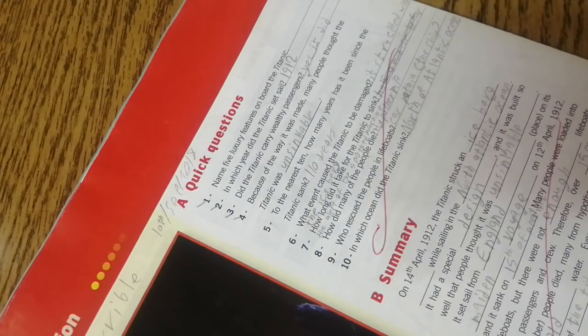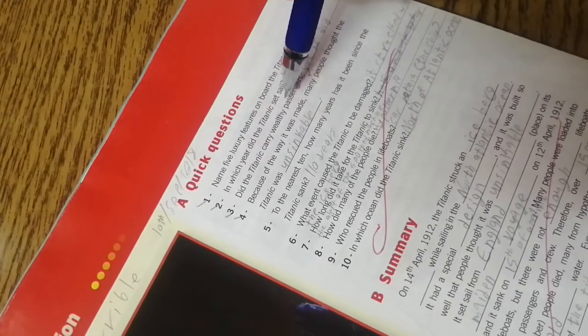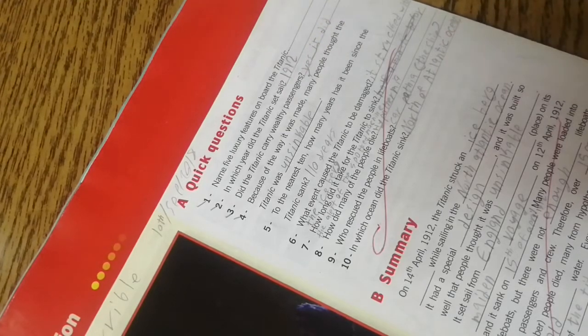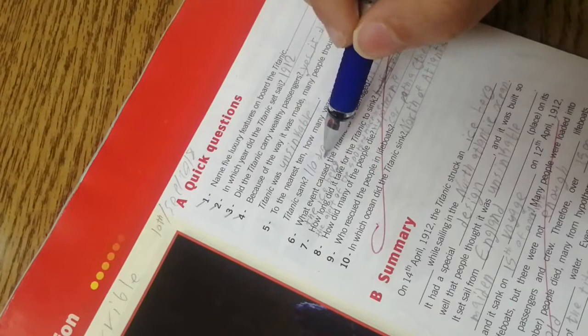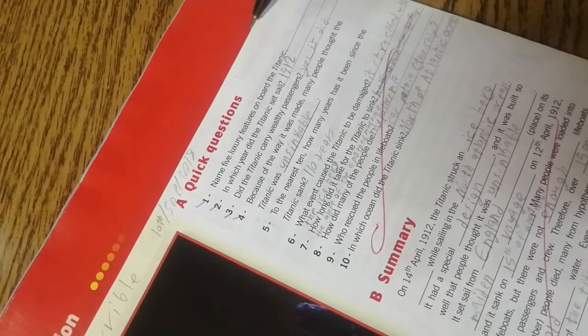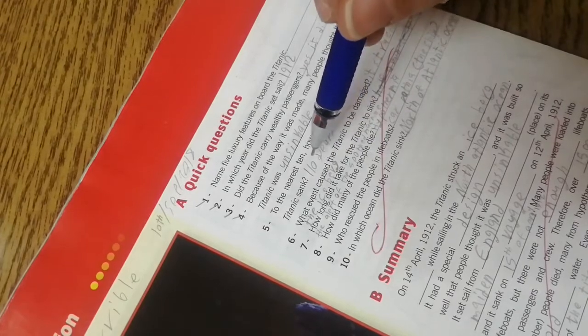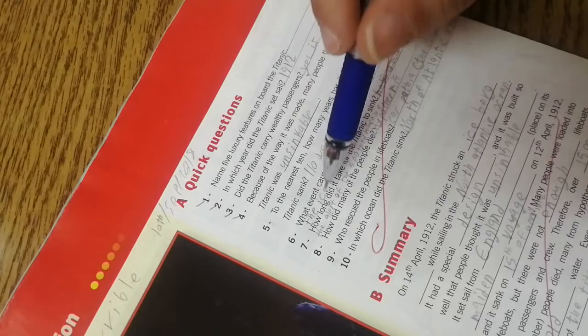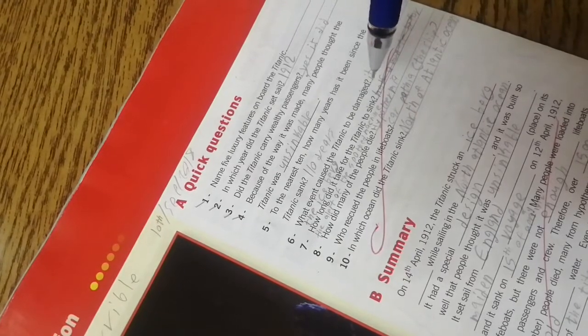In which year did the Titanic set sail? 1912. Did the Titanic carry wealthy passengers? What event caused the Titanic to be damaged? It struck an iceberg. How long did it take for the Titanic to sink? Two hours and a half.